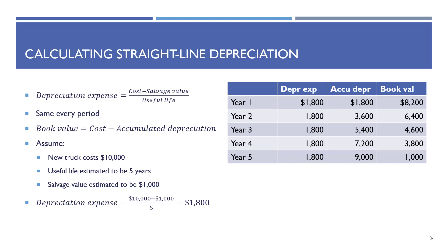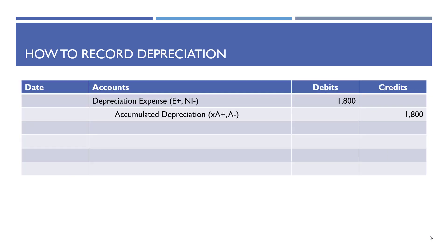The same calculation applies for years three, four, and five. The journal entry to record depreciation is always: debit depreciation expense and credit accumulated depreciation. Debiting depreciation expense increases the expense and decreases net income. Crediting accumulated depreciation increases the contra asset account and decreases assets. For straight line depreciation, since the amount is always the same, the journal entry amount is the same every year.